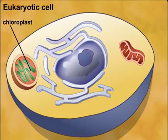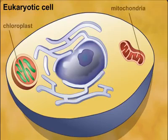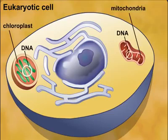Several facts provide evidence for the endosymbiotic hypothesis. First, mitochondria and chloroplasts contain their own circular DNA, similar to DNA in bacteria.